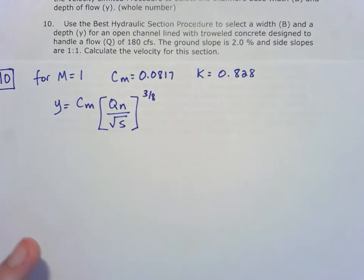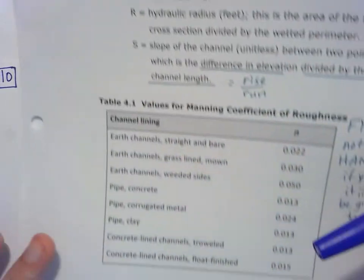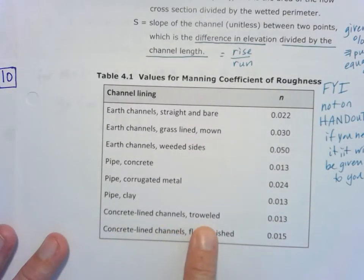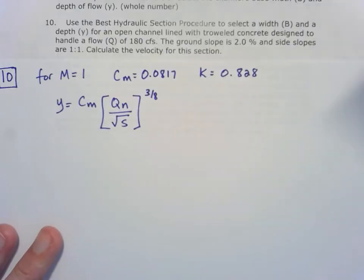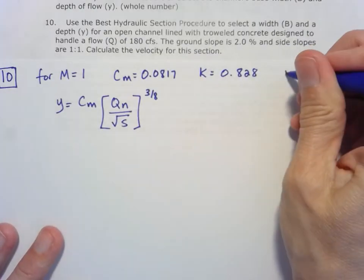but we do have a table that we can refer back to, table 4.1, and this is troweled concrete. So when we look at our concrete lined channel that's troweled, our Manning's N is 0.013. So let's go ahead and write that up at the top here.